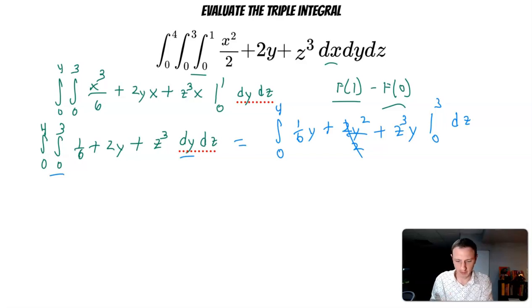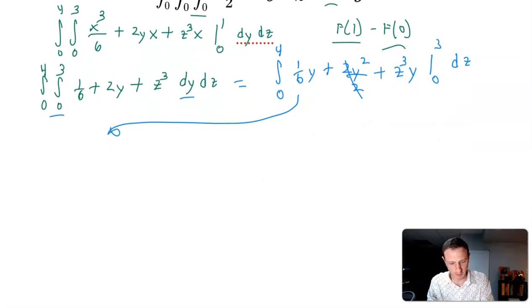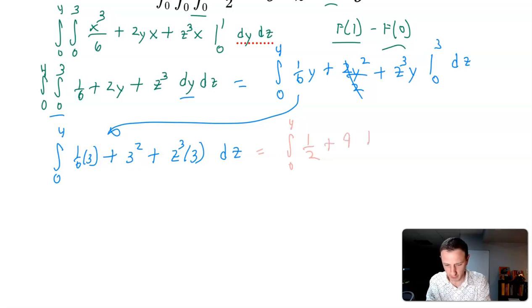Now let's plug in 3, plug in 3 into anywhere where we see a y. So we're going to have the integral from 0 to 4, and this is going to be 1 sixth times 3, plus 3 squared, plus z to the third times 3. And this is dz. So we're going to have the integral from 0 to 4. 1 sixth times 3 is going to be 1 half, plus 3 squared is 9, plus 3 times z to the third is 3z to the third. And that's dz. And I know I could do 1 half plus 9, I'm going to leave it alone just to save myself the stress of adding these fractions.